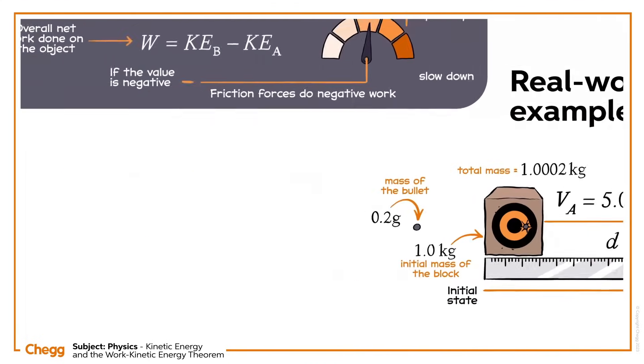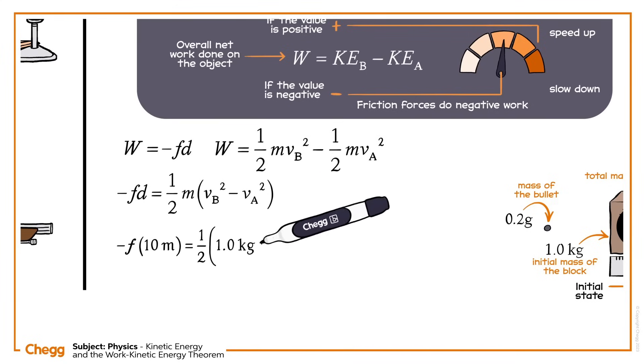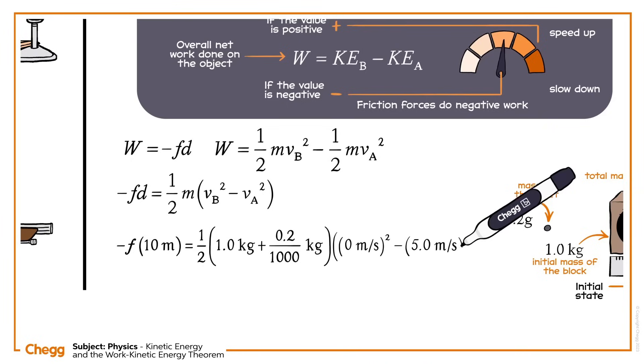The work done by the friction force is negative because the friction acts in the opposite direction to motion. So, using the equation we introduced earlier, the work equals negative force times displacement. We can also calculate work done with our work energy theorem. Putting those two equations for W together, we get this. And, after inputting the values we already know, we can solve to find that the friction force has a value of 1.25 Newtons.